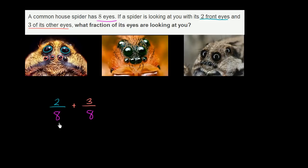So this is really about adding fractions — adding two eighths of something to three eighths of something. So what fraction of its eyes are looking at us? Well, it's still going to be a fraction of eight. Two plus three over eight, which is just going to be equal to five eighths of the eyes.